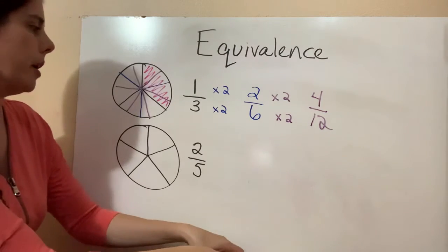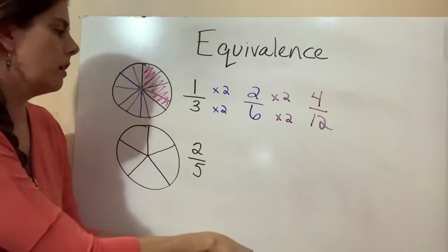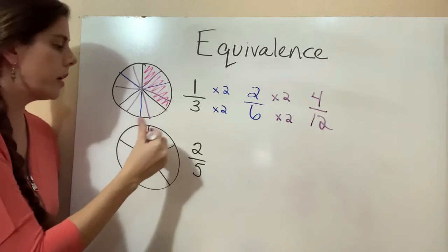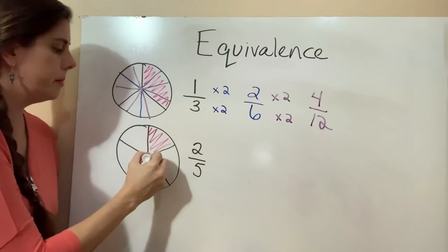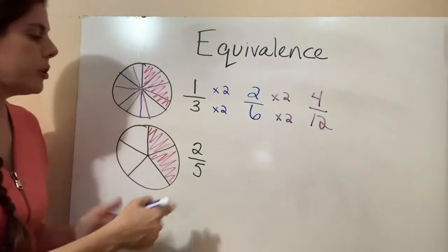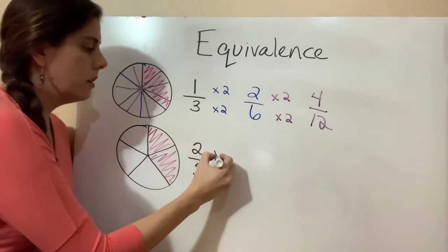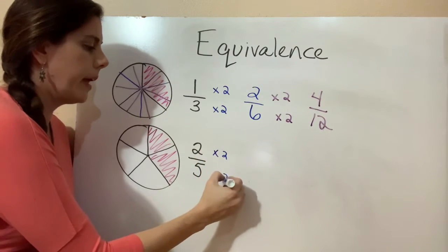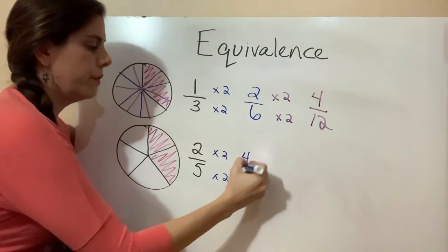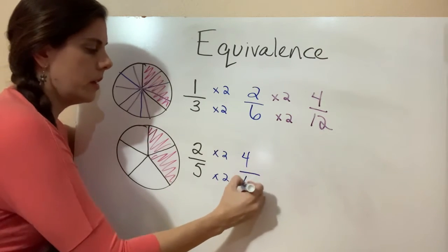So let's do the same thing on the bottom here. We have our slice of pie. It's got five pieces, and we're going to look at two of them. So what we're going to do to make an equivalent fraction is multiply the top and the bottom by two. So two times two is four. Five times two is ten.